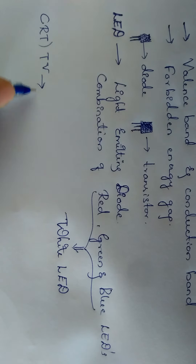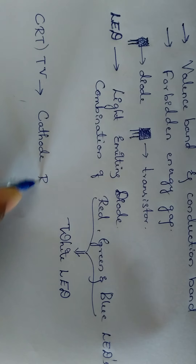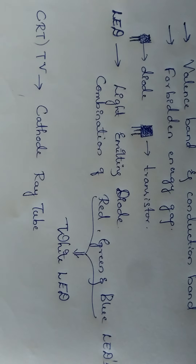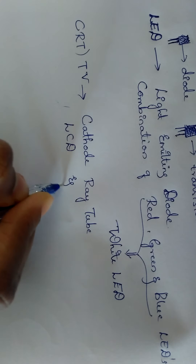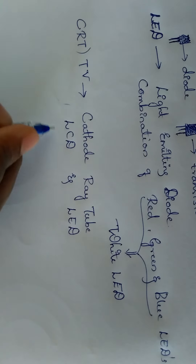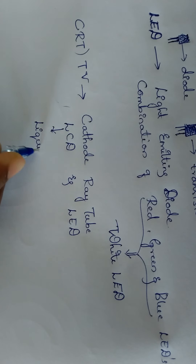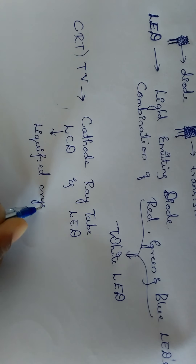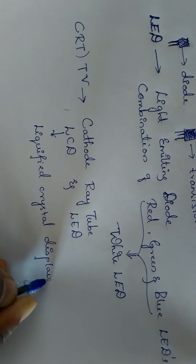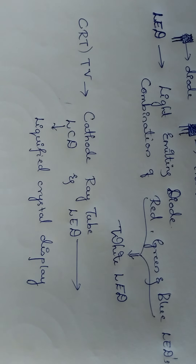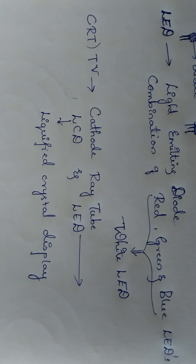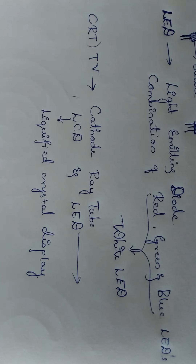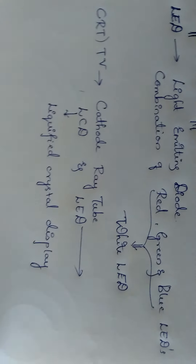CRT stands for cathode ray tube. These CRT TVs are replaced by LCD and LED TVs. LCD stands for Liquid Crystal Display. The CRT tubes were huge and used to occupy so much space, whereas the LCD TVs are very small and thin, so you can keep them wherever you want.